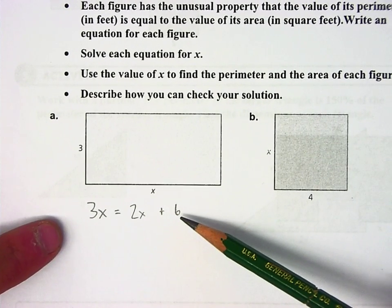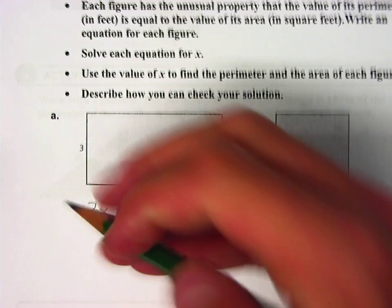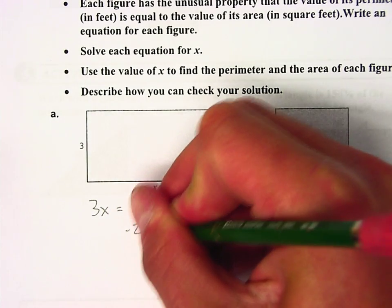I'm not going to subtract 6. That wouldn't help me, but I am going to subtract 2x's. Let's subtract 2x's from both sides.